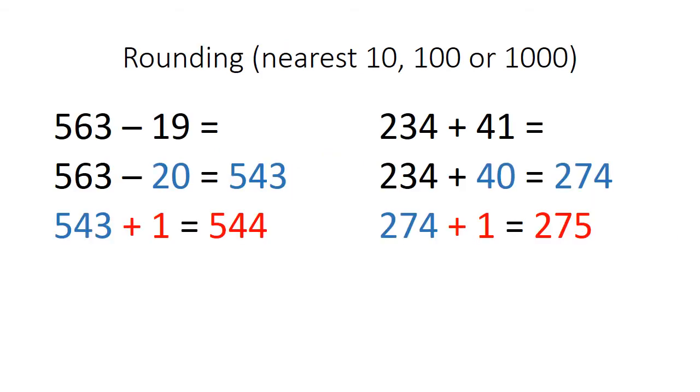The next strategy that you may choose to use is rounding. This could be rounding to the nearest ten, rounding to the nearest hundred, or rounding to the nearest thousand depending on the numbers. The reason you may choose to use this strategy is that it would make the numbers easier to complete and then you can take or add away the extras afterwards.